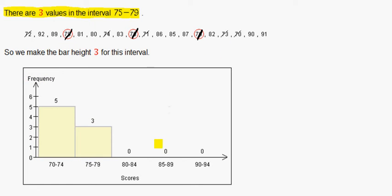We can do the same thing for the rest of the numbers. So if we look at the category 80 to 84, there are 1, 2, 3, 4, 4 numbers. So we can go up to 4, and that's where we'll make our bar.